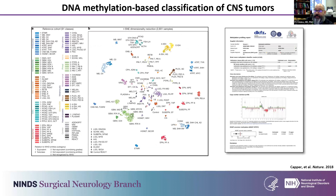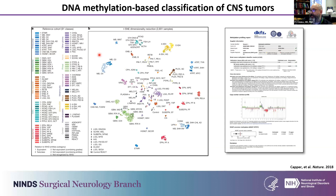DNA methylation-based classification of CNS tumors first came about in 2018, pioneered by David Capper and the Heidelberg group through DKFZ, where they took a large reference cohort, did machine learning with a random forest approach, and were able to resolve different tumor types. We can see in this dimensionality reduction plot — this t-SNE plot — where different tumor types really resolve into unique spaces within these maps, reflective of the classifiers that we use.